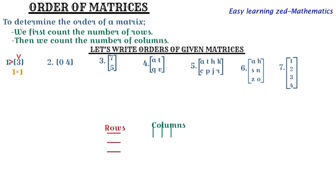Now let's come to example two. When we check the lines of numbers lying horizontally, we have just one row. Then when we check for lines going downwards, we have two: there is a line where there is zero and another line where there is four. So we have two columns, making this matrix's order one by two.